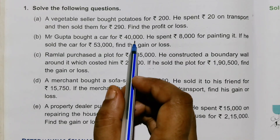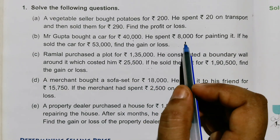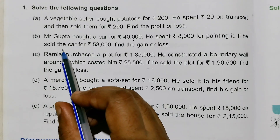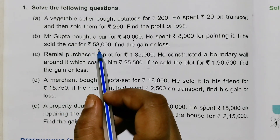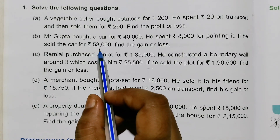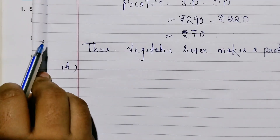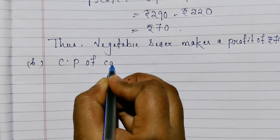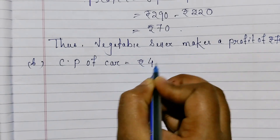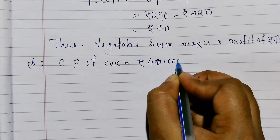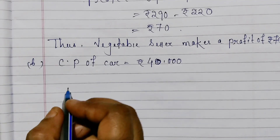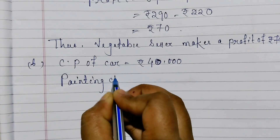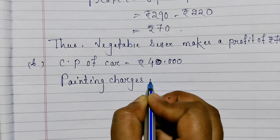First we see: cost price of car is 40,000 and painting charges are 8,000, so actual cost price is 48,000. Cost price of car equals 40,000 rupees and painting charges equal 8,000 rupees.